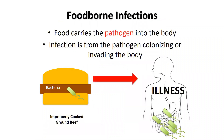A foodborne infection results from ingesting a microorganism. The microorganism grows in our body and as a result we get sick. In this example, we have improperly cooked ground beef. E. coli O157:H7 survives in this product as a result of that improper cooking. If that undercooked hamburger is then ingested, the E. coli can grow in our intestinal tract and this results in foodborne illness.